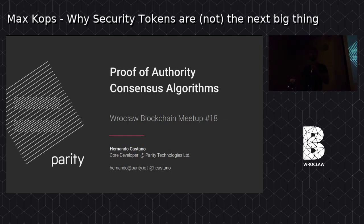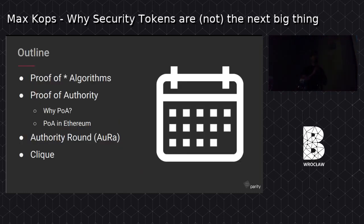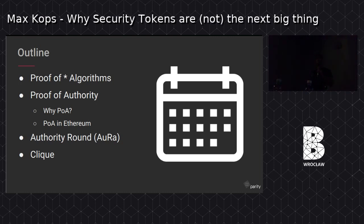I'm going to be talking more about the underlying consensus algorithms and how they're used in Ethereum. So what's our outline for tonight? I'm going to go over a couple of the typical proof of whatever algorithms, then we'll dig into proof of authority and how it's used within Ethereum. After that I'll do a deeper dive into Authority Round and Clique, which are two PoA algorithms in Ethereum.